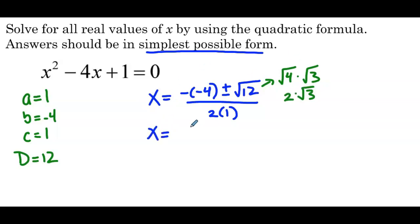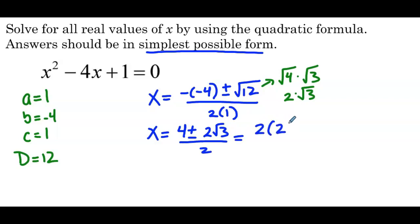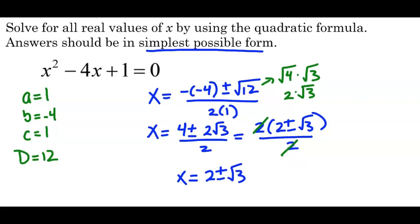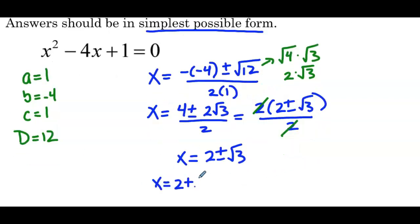So we can rewrite it as positive 4 plus or minus 2 times the square root of 3, over 2. Each term in the numerator is divisible by 2, so I'll factor out a positive 2 — the GCF — giving us 2 times the quantity 2 plus or minus the square root of 3, over 2. The 2 factored out and the 2 in the denominator simplify, and we have x equals 2 plus or minus the square root of 3. Written separately: x equals 2 plus the square root of 3, or x equals 2 minus the square root of 3. Those are the two solutions.